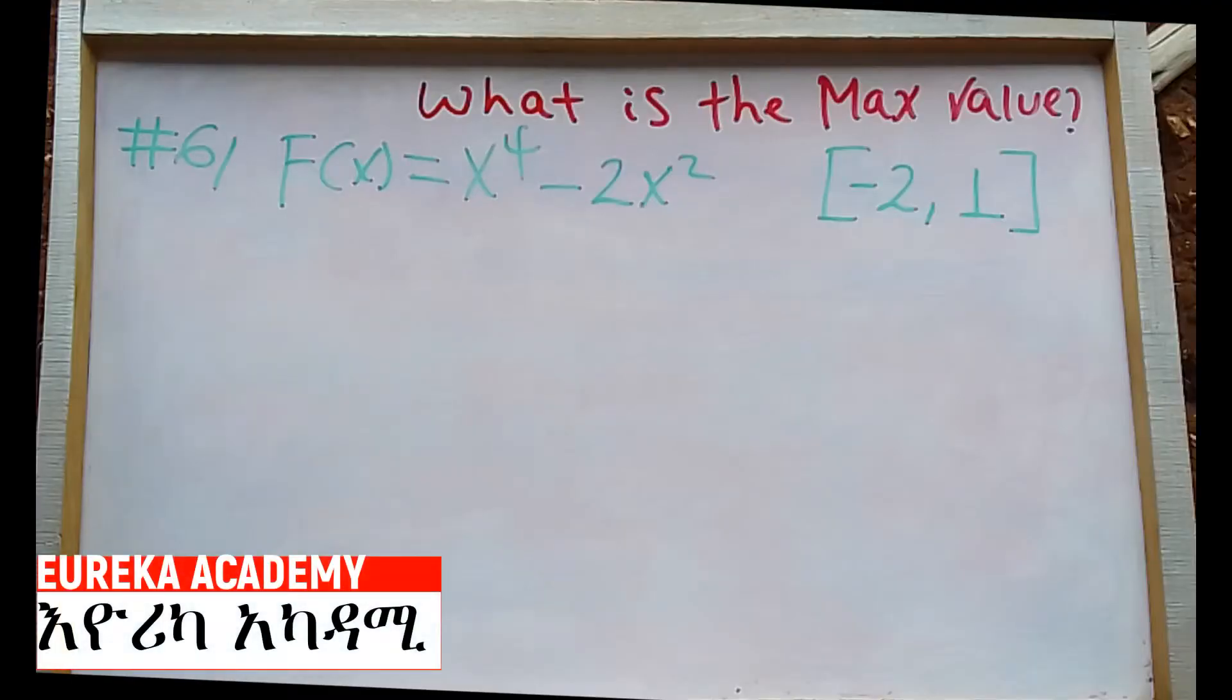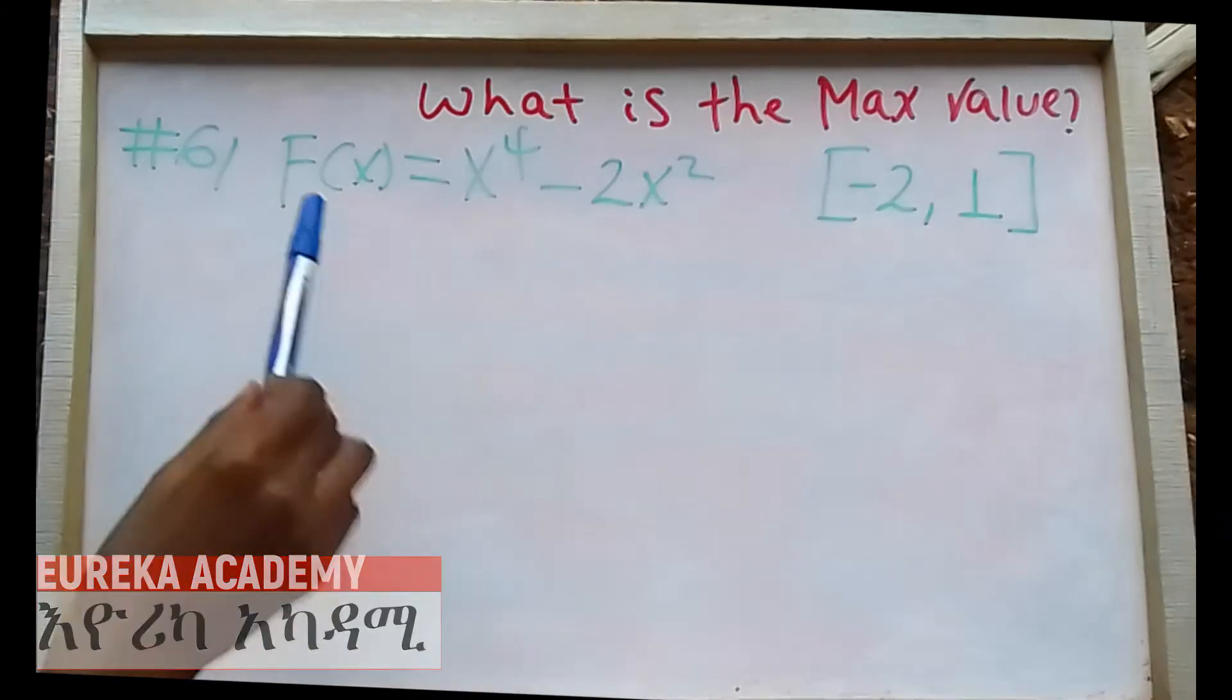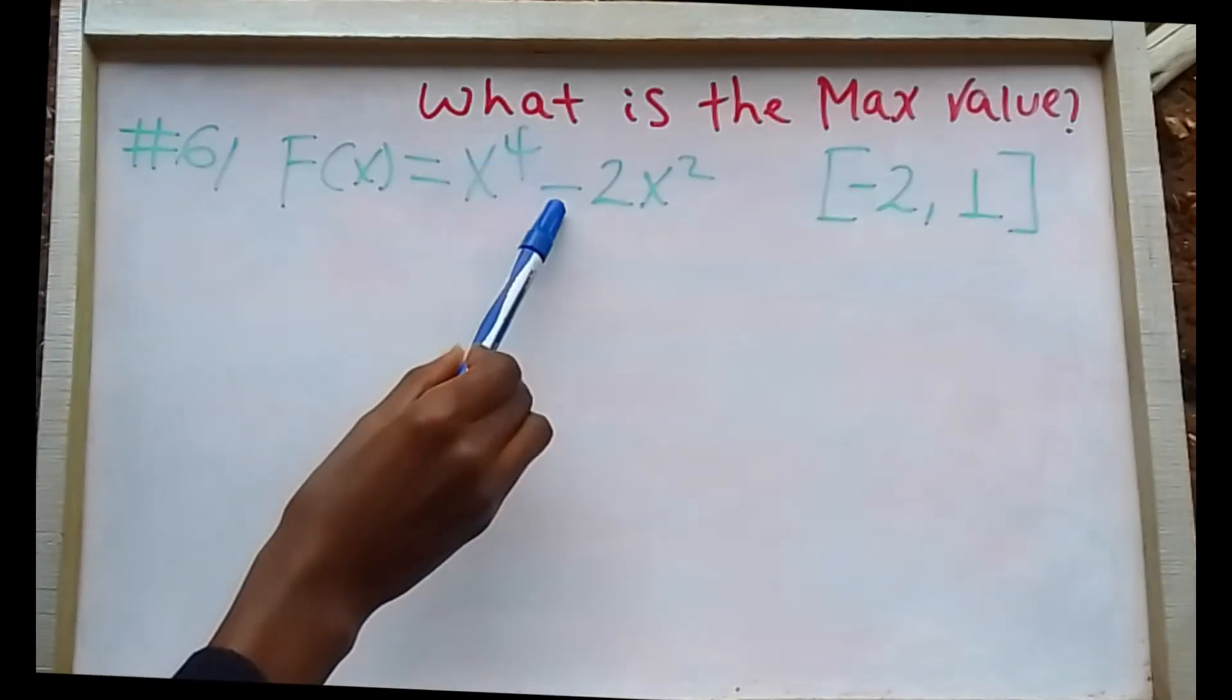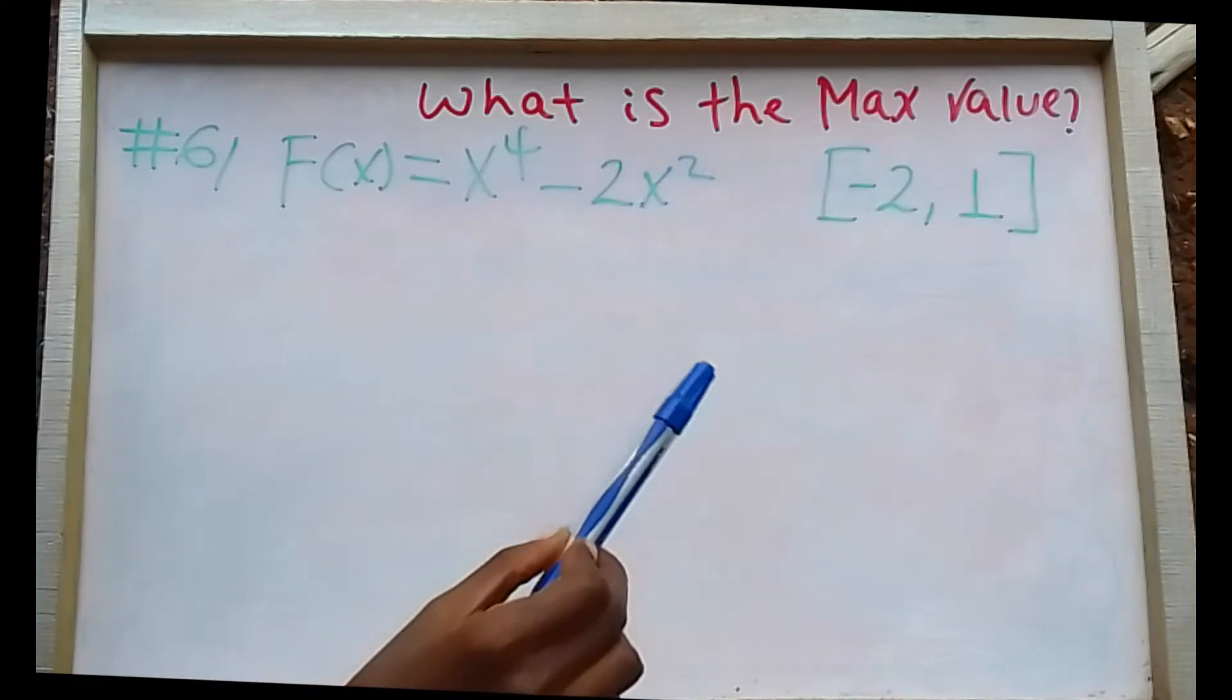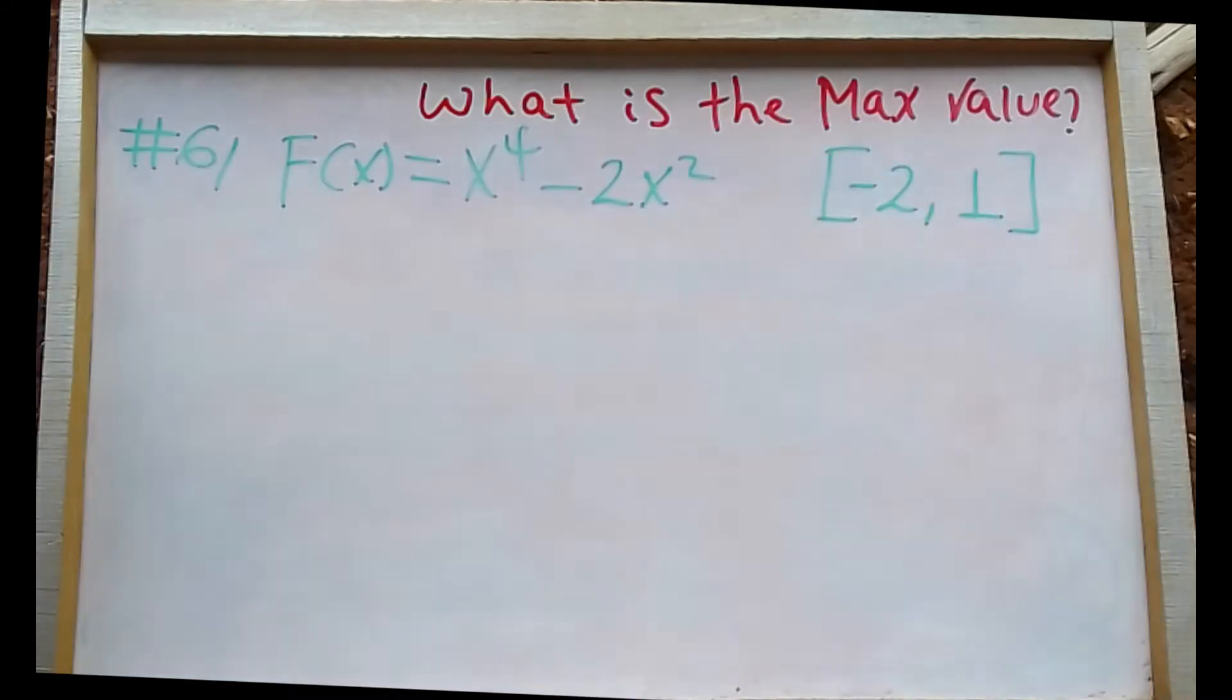Number six: What is the maximum value of this function f(x) equals x to the power of 4 minus 2x squared, which is bounded between minus 2 and 1?